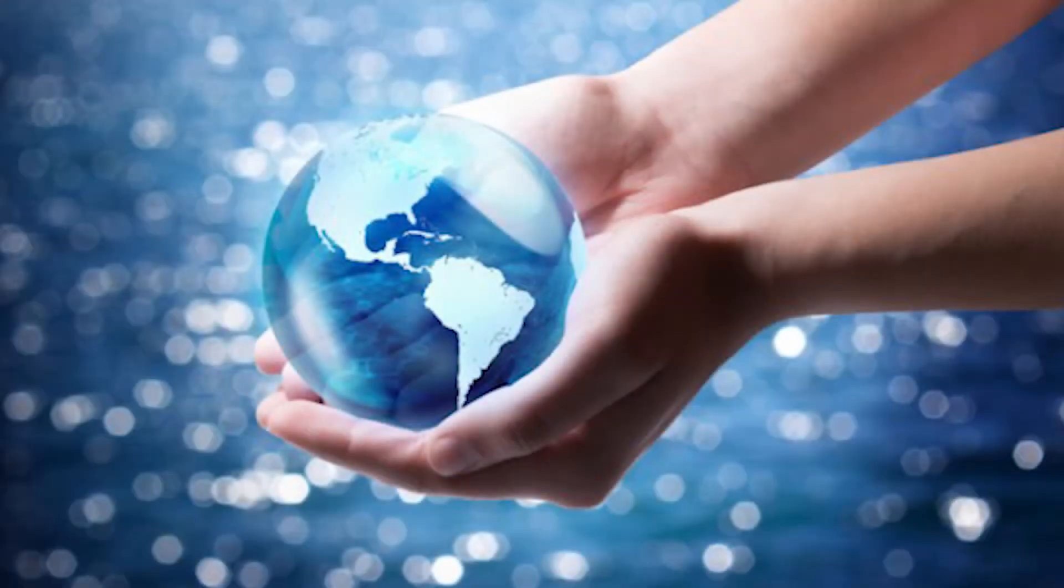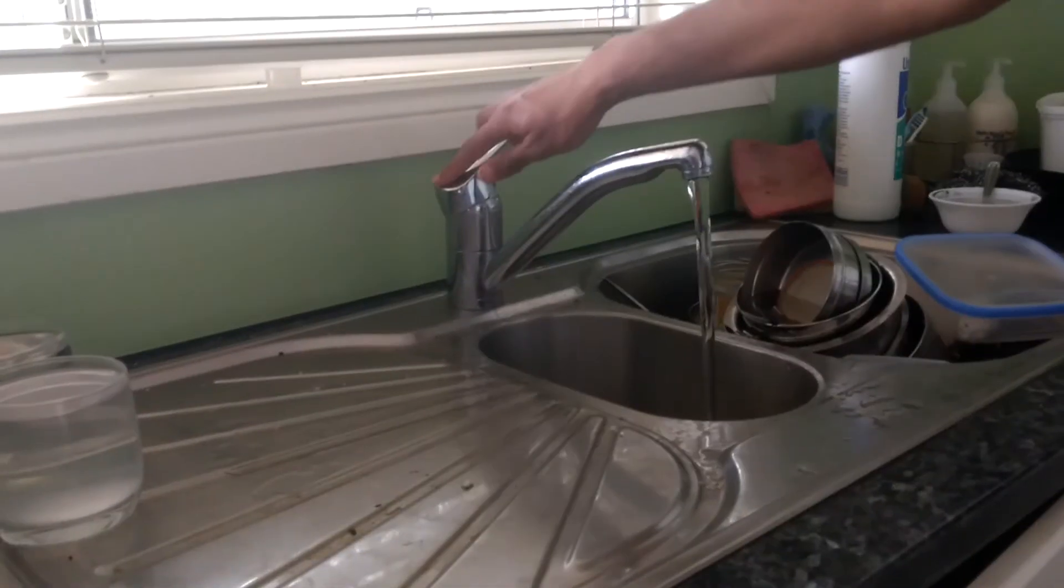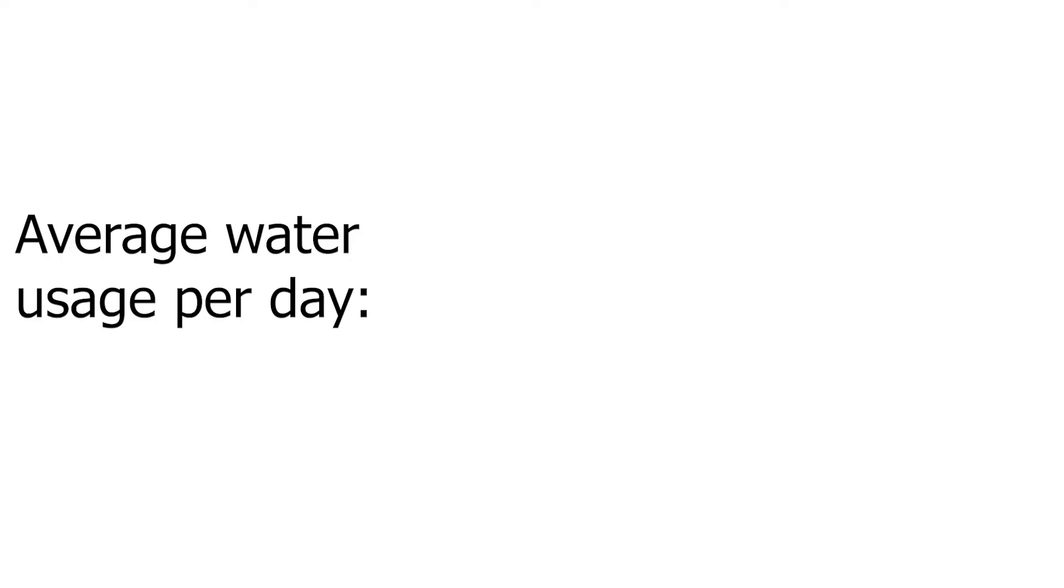The first step to increase the availability of water is to just reduce water wastage. Everyone can do that. It's as simple as just turning off the tap when it's not in use. On average, a person in Sydney uses around 280 litres of water every day.